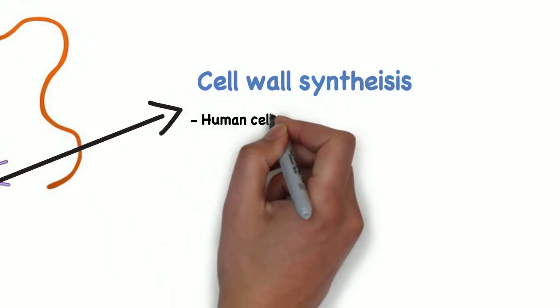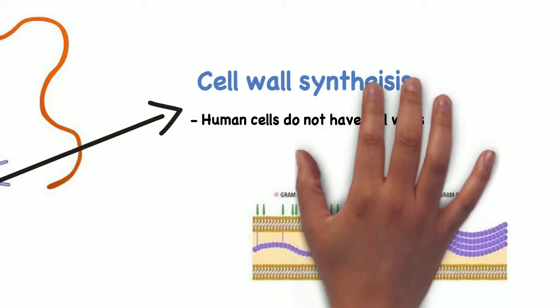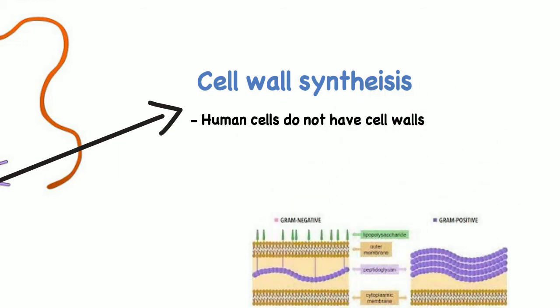When it comes to the cell wall, because human cells do not have a cell wall, these antibiotics do not directly harm human cells. The bacterial cell walls can be gram-positive or gram-negative, which have different cell wall structures. Therefore, different antibiotics must be used.